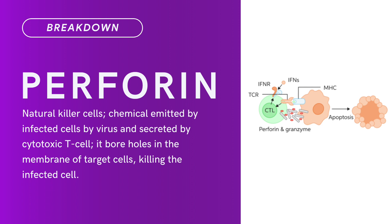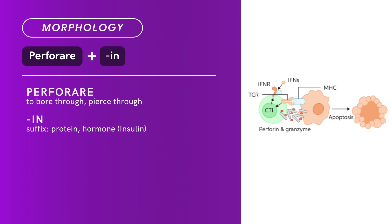Compound term: perforin. Brief definition: natural killer cells — chemical emitted by infected cells by virus and secreted by cytotoxic T-cell. It bores holes in the membrane of target cells, killing the infected cell. Term morphology: perforin means hormone that helps cells bore holes on viruses. Compound of perforare plus in.